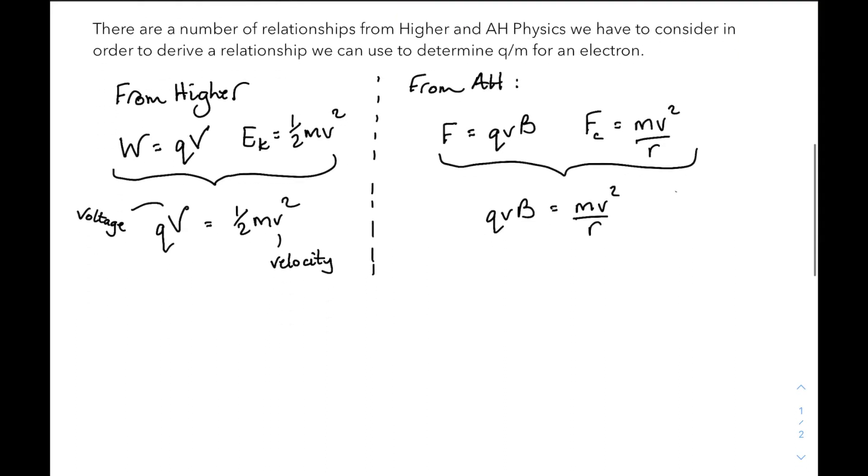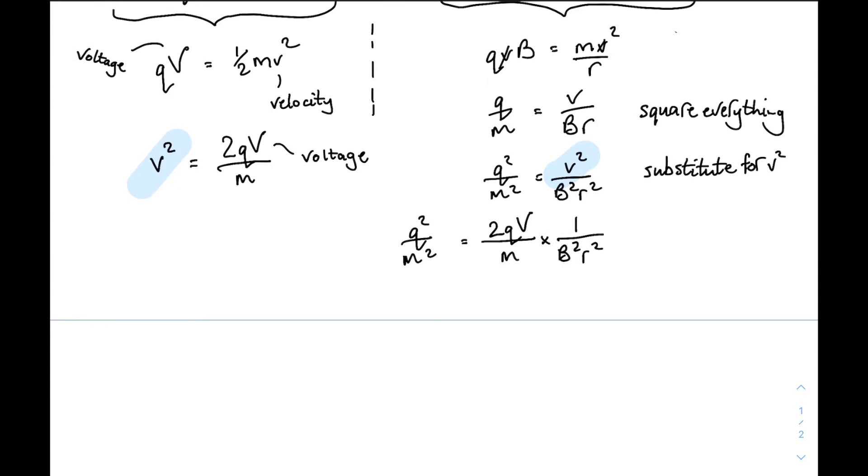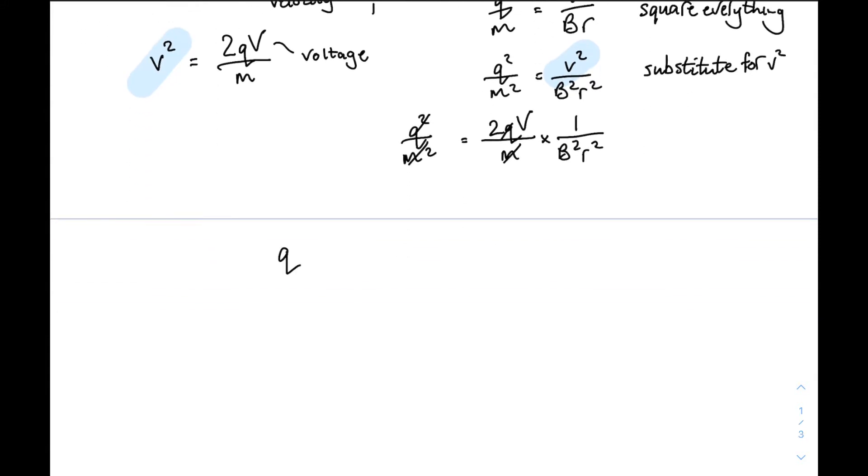Now on the left, if we rearrange for v squared, so v squared is 2qV over m. Remember, big V is the voltage, the anode voltage. And on the right, if we cancel v on each side and rearrange for q over m, q over m equals v over br. If we square everything on the right hand side there, so q squared over m squared is v squared over b squared r squared. And now we have v squared on the left, v squared on the right, and we can substitute in that expression on the left into our expression on the right. And cancelling a q over m on each side, we get the relationship we're looking for. Q over m is 2V over b squared r squared.